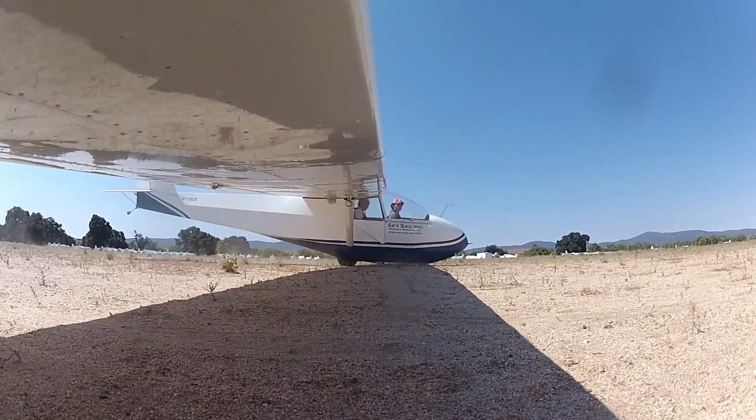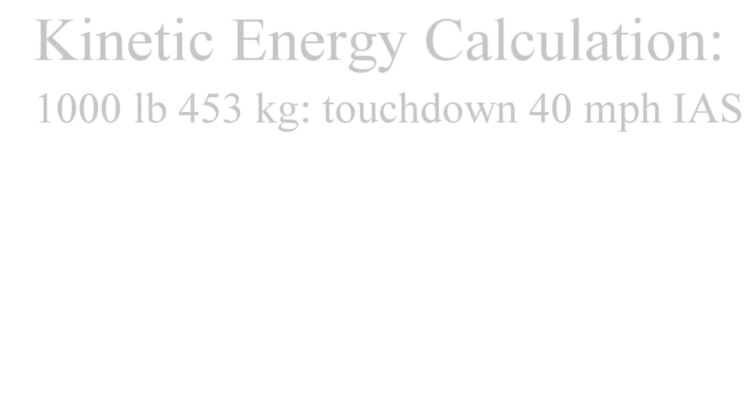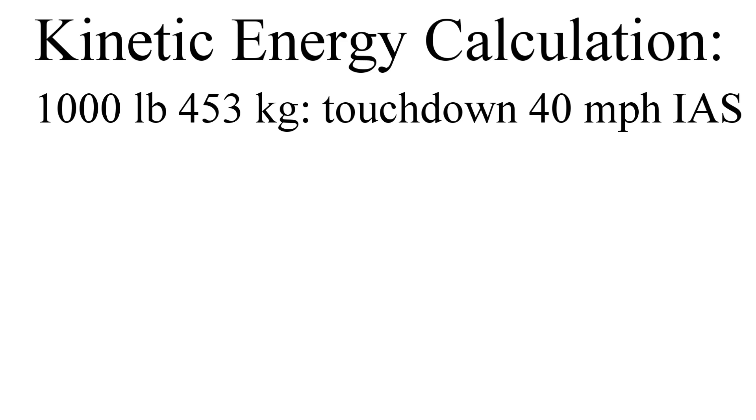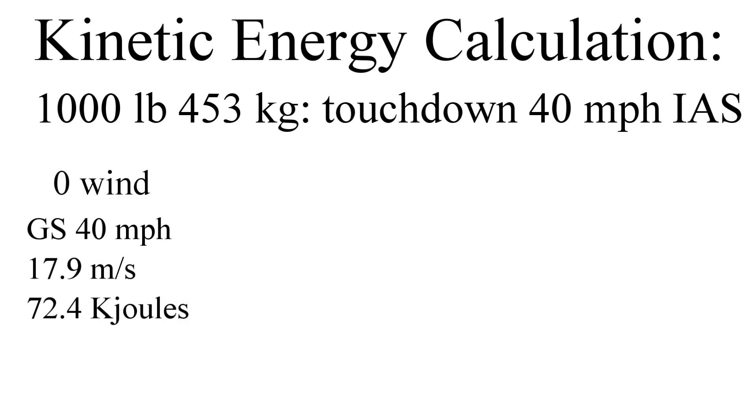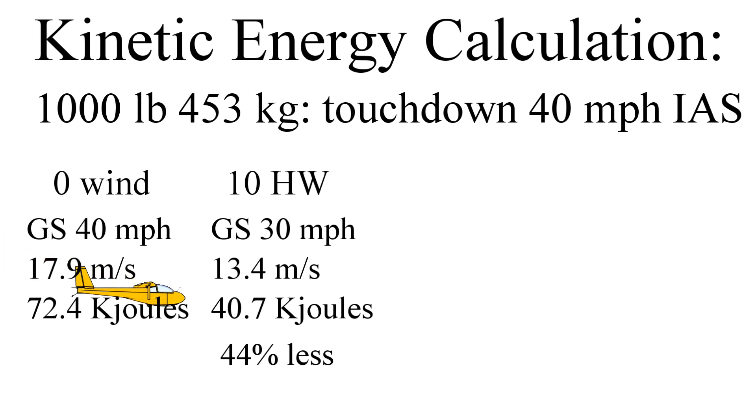Let's take a typical 1,000-pound Schweitzer 2-33. We'll say on a calm day, we'll touch down at around 40 miles an hour. Now we'll plug in some numbers, convert the English units to meters per second and kilograms to generate the kinetic energy value in joules. So at zero wind, landing at 40 miles an hour, we have 72,000 joules, or 72 kilojoules. With a 10-knot headwind, 25% slower, and therefore a touchdown speed of 30 miles an hour, our kinetic energy is 40.7 kilojoules, 44% less energy. How about with a 20-mile-an-hour headwind? Now we're touching down at a ground speed of 20 miles an hour and a kinetic energy of only 18 kilojoules, half the speed and a quarter of the energy.